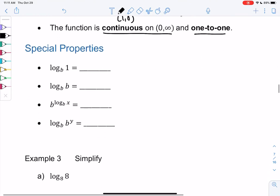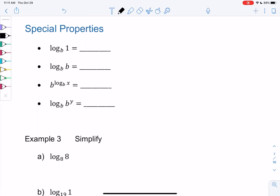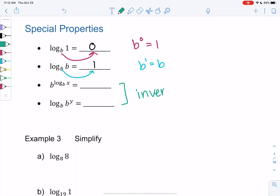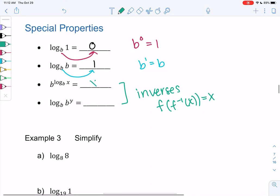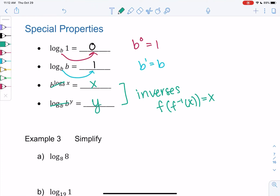So a couple properties about logs. These will be really useful for simplifying. Log base b of 1. So this is true for any base, and it'll be 0. Why is it 0? Because b to the 0 power is 1. Any number to the 0 power is 1. Log base b of b. So when the bases match, we always get 1. And this is true because b to the 1 power is the same thing, b. 2 to the 1 power is 2. 3 to the 1 power is 3. And then these last two examples have to do with the inverse property. We learned back when we learned inverses that f of f inverse of x just brings us back to x. They cancel each other out. So b to the log base b cancels out and just leaves me with x. And then if we have log base b of b to the y, they cancel out and just leave me with y. And that's because they're inverses of each other.